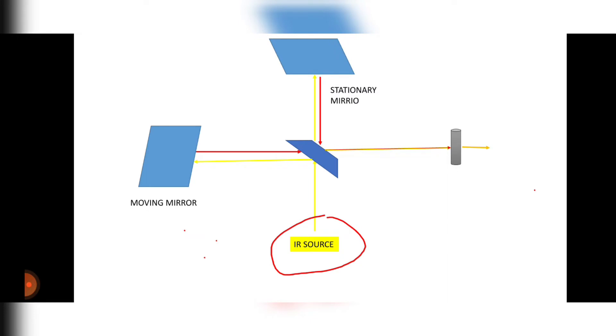It will pass to the sample, and if it is not absorbed by the sample then it will move to the detector and move to the interferogram. If it is absorbed by the sample then it will undergo vibration, stretching or bending.